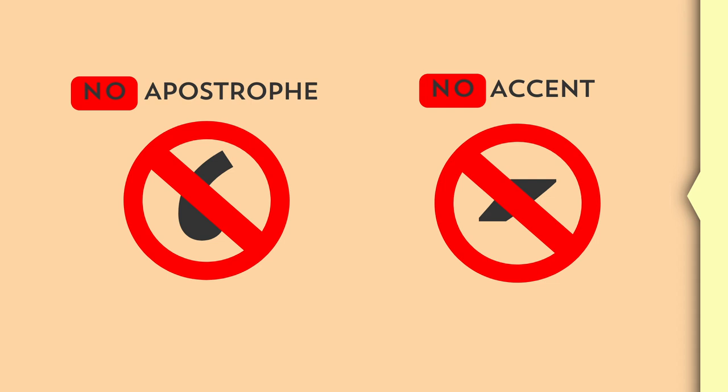But how do you signal the apocope? We learned in the previous video that elision is signaled by the apostrophe. But what about the apocope? Well, it can be quite tricky. The apocope is signaled by the absence of graphic signs. Thus, we will not have either an apostrophe or an accent. This is the rule: no apostrophe, no accent, nothing.